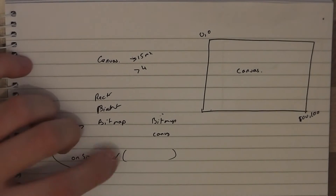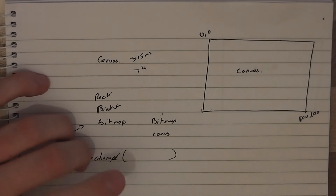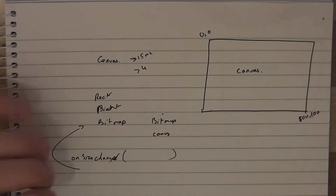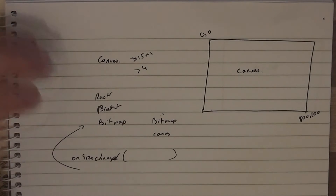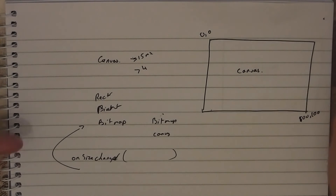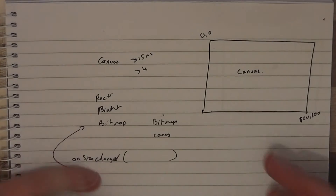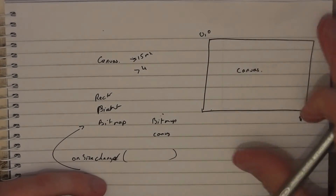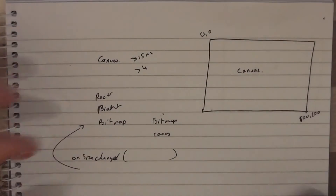In OnSizeChanged you calculate your rects and your positions. You should only do math-based calculations in here. Any bitmaps, masks, stuff like that that you need to load — load them in your constructors, or when the views get passed in via a setter or something like that. The last thing we're going to talk about now in the draw is the paint. We've already seen how the canvas draws onto our bitmap.